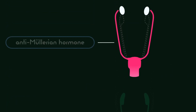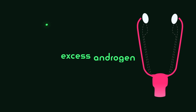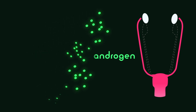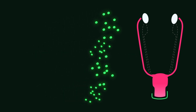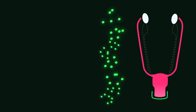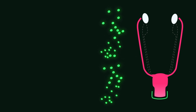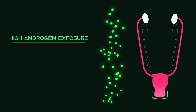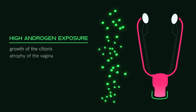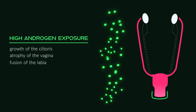While the ovaries and Müllerian structure fully develop, the excess androgen produced from the adrenal glands often masculinizes the external genitalia, a region highly sensitive to androgen exposure. This can result in the growth of the clitoris, atrophy of the vagina, and sometimes a fusion of the labia.